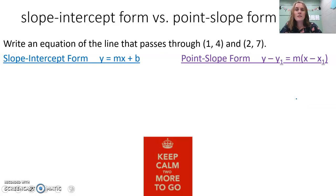Considering slope-intercept form versus point-slope form, we're writing an equation that passes through two points. We're going to write an equation that passes through the points (1, 4) and (2, 7), trying it both ways with slope-intercept form and point-slope form.